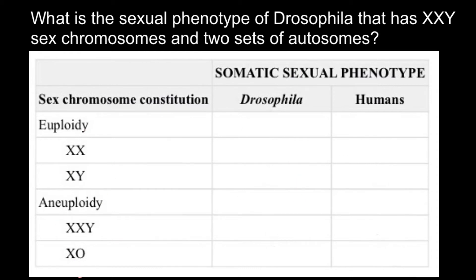Let's now complete the comparison table of genotypes and phenotypes in humans and Drosophila. Euploidy means a normal number of chromosomes, and aneuploidy means some chromosomes are extra or missing. For euploidy: two X chromosomes in Drosophila means female phenotype, and also female in humans. X and Y in a diploid Drosophila means normal male phenotype, and also normal male in humans.